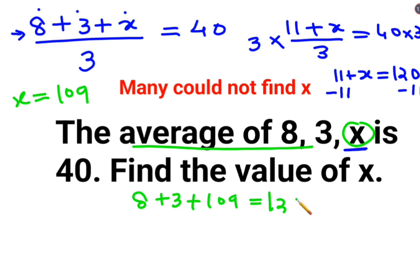You divide 120 by the number of elements, that is 3. You get the answer as 40, which is absolutely correct. So the value of x comes out to be 109.